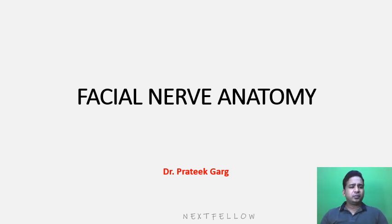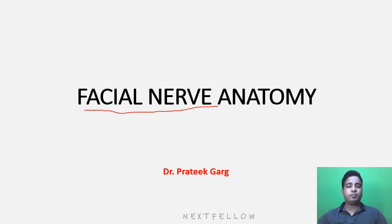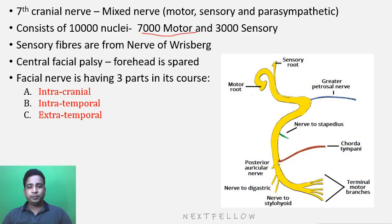What do you mean by facial nerve? It's the seventh cranial nerve. It's a mixed nerve - why mixed? Because it consists of motor, sensory, as well as parasympathetic fibers. It consists of a total 10,000 nuclei, out of which 7,000 nuclei are motor and 3,000 nuclei are sensory.